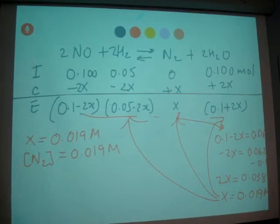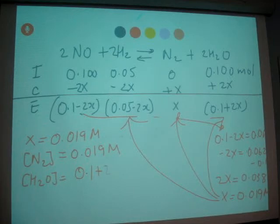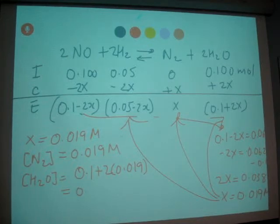When you solve for H2O concentration, you have 0.1 plus 2 times 0.019. And when you solve for it, you get 0.138 molar for H2O.